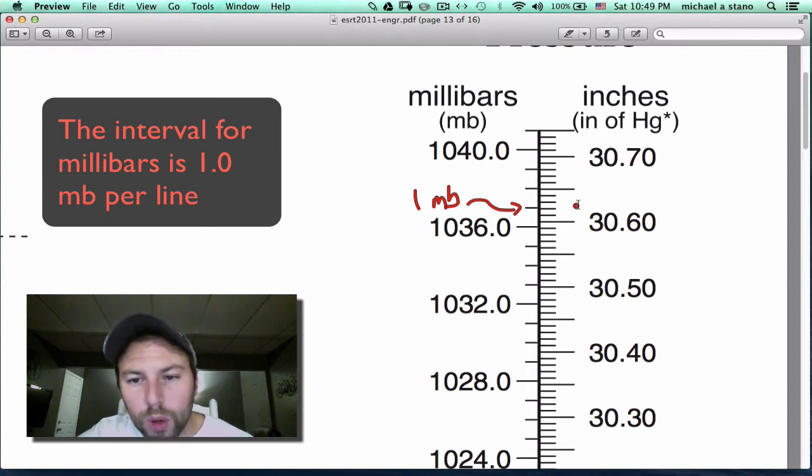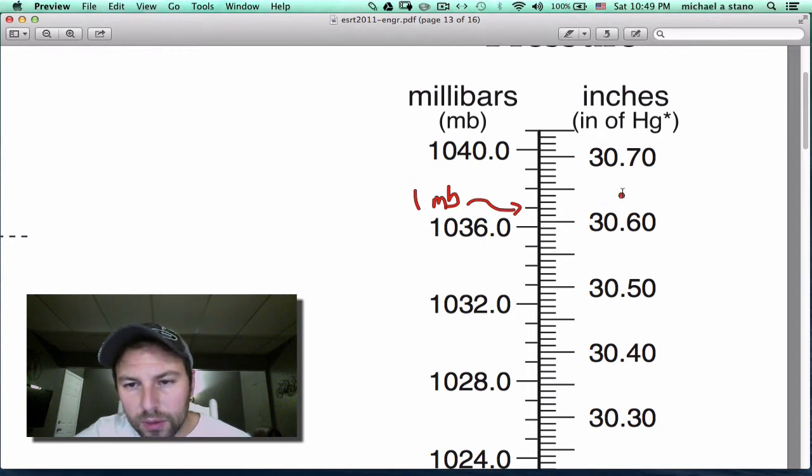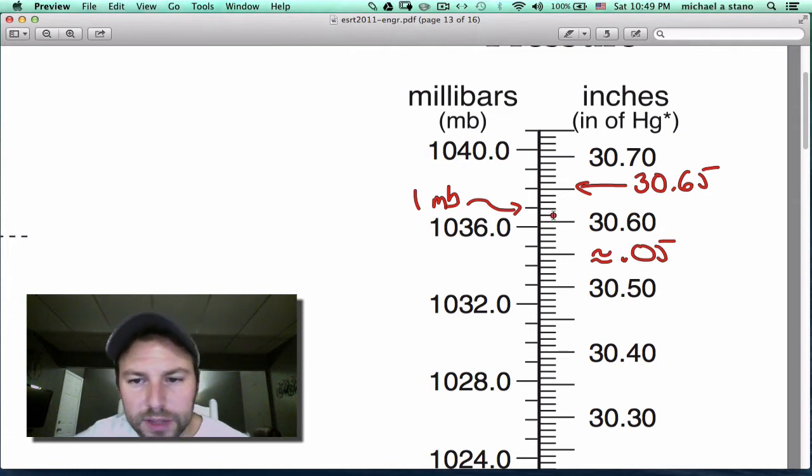On the right hand side where we have inches of mercury, we can see that we have this larger line in the middle here. So if we go from 30.6 to 30.7, halfway in between would be 30.65, so making these larger ones worth 0.05. And we see we have lines in between that too: one, two, three, four, five lines.